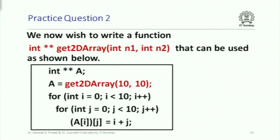Now we want to write a function called get2DArray that takes two integer parameters n1 and n2 and returns a pointer to a pointer to an integer. The example usage is get2DArray(10, 10), which returns something usable as a 10 by 10 two-dimensional array — accessible with nested for-loops and double-bracket indexing. Unlike last time where dimensions were fixed, here n1 and n2 are parameters, so we cannot pre-declare a fixed number of arrays.